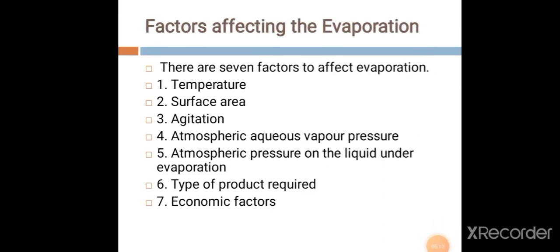Factors affecting evaporation: there are several factors which affect the rate of evaporation — temperature, surface area, agitation, atmospheric aqueous vapor pressure, atmospheric pressure on the liquid under evaporation, type of product required, and economic factors. These are the seven factors which directly affect the rate of evaporation.